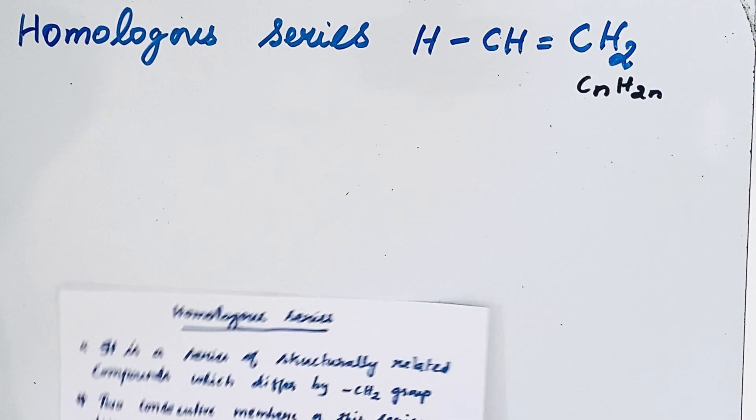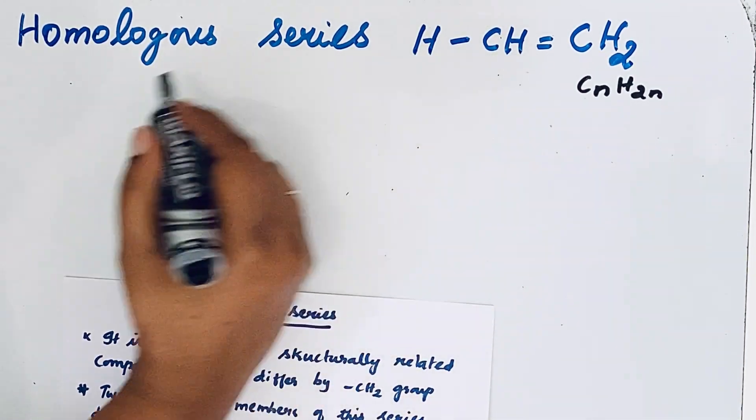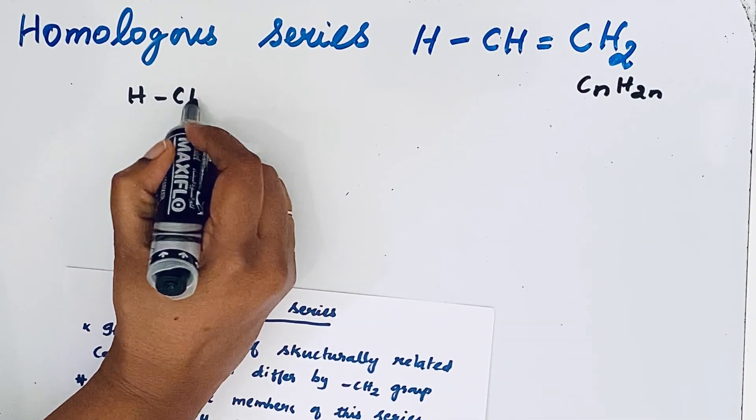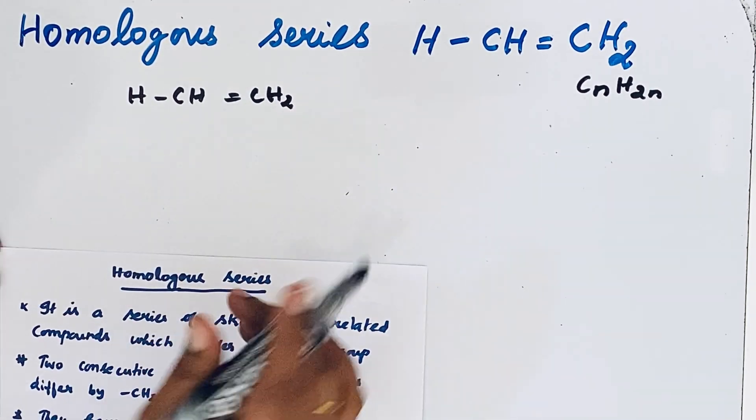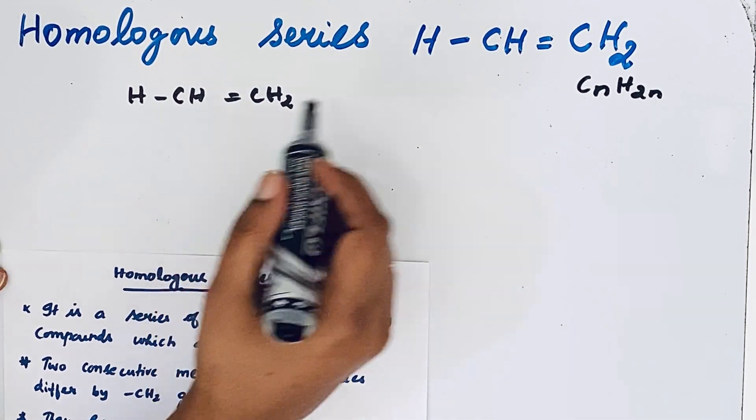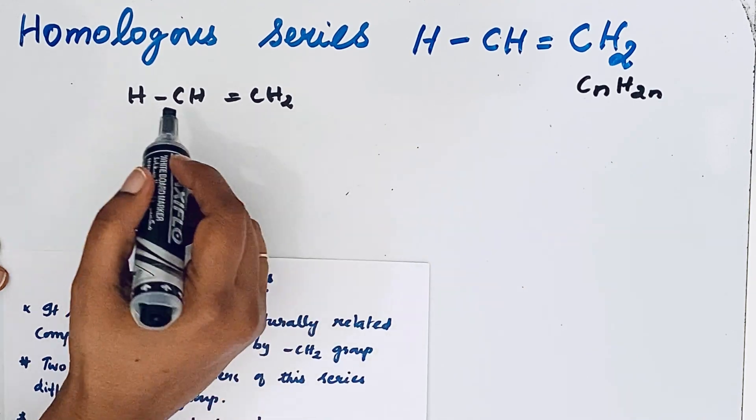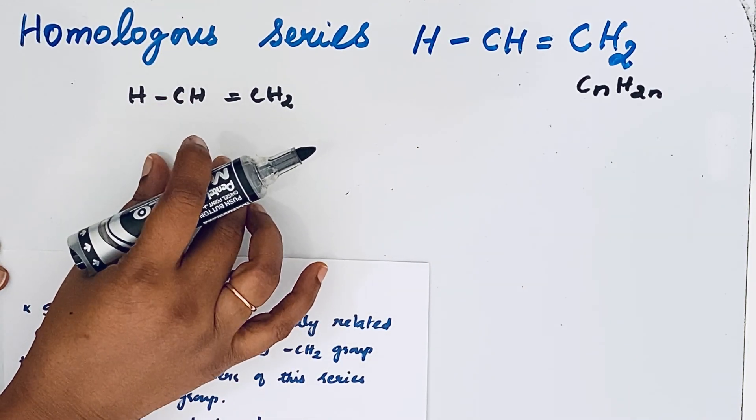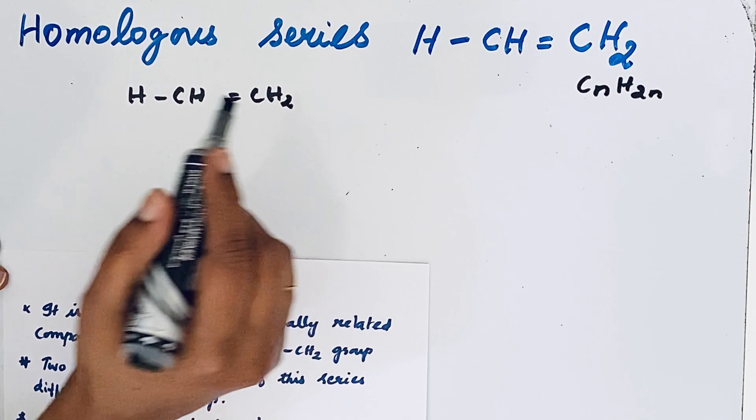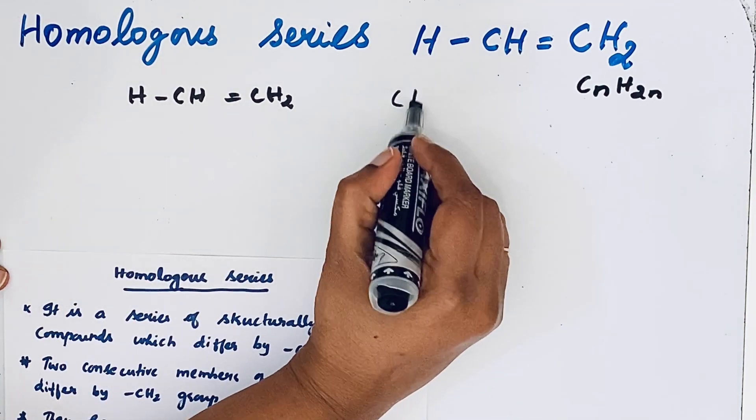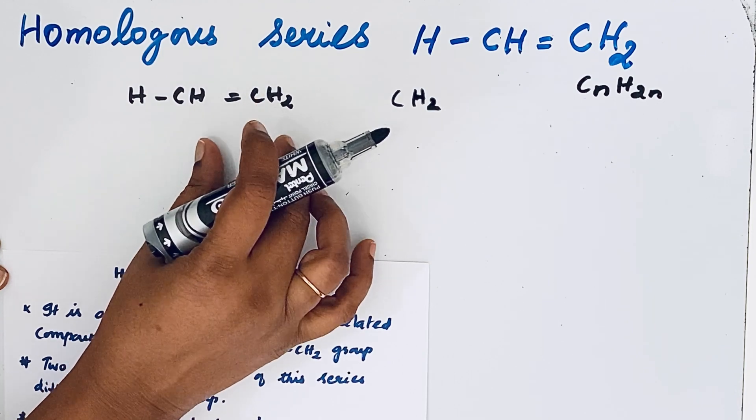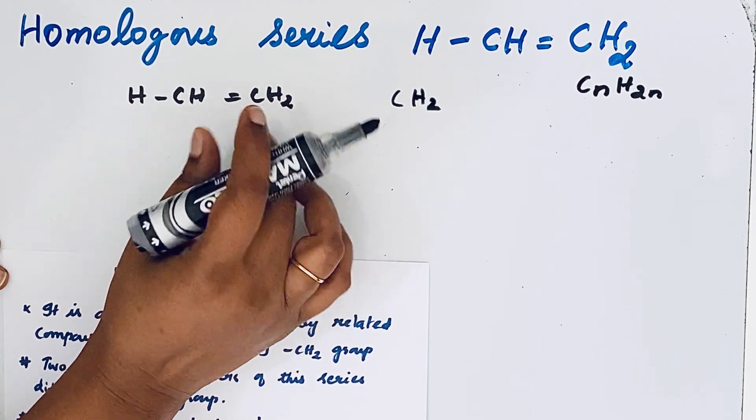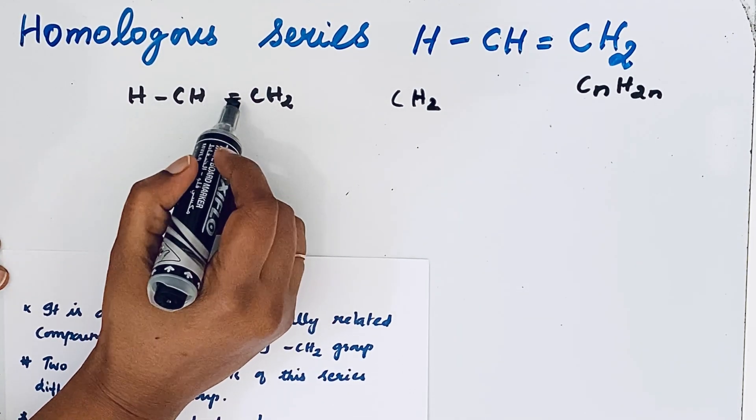So let us write this one first: H-CH=CH2. Since they differ by CH2 group, adding the CH2 group will give the next homologous series. Now the question is, where should we add that CH2 group? Here you should be very careful that while writing the homologous series, we should not alter the position of the functional group, here that double bond.